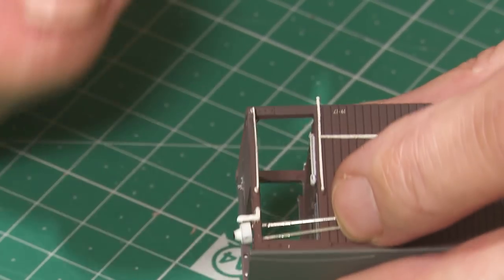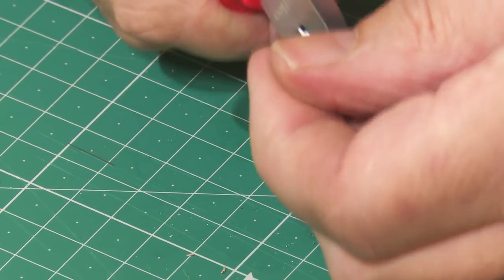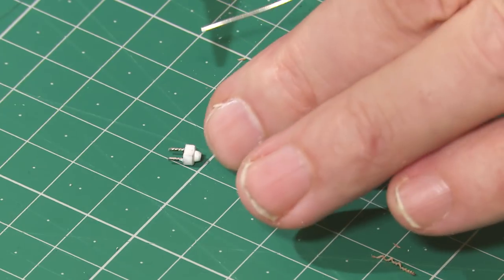So once you've marked it, pull it out and then we cut it off at that length. The next thing to do is tin them.